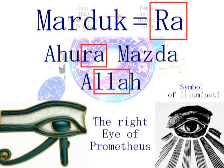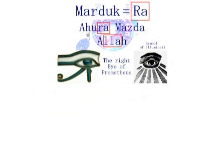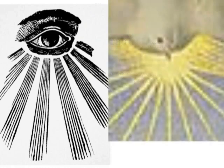フリーメイソン、もしくはその上位団体のイルミナティのシンボルマークともなっています。ラーの目とイルミナティの目を比較してみてください。右目か左目か、ここが一つのポイントとなりますが、共に右目である点に注意してください。左がイルミナティのシンボルマーク、そしてこんな絵も描かれていました。